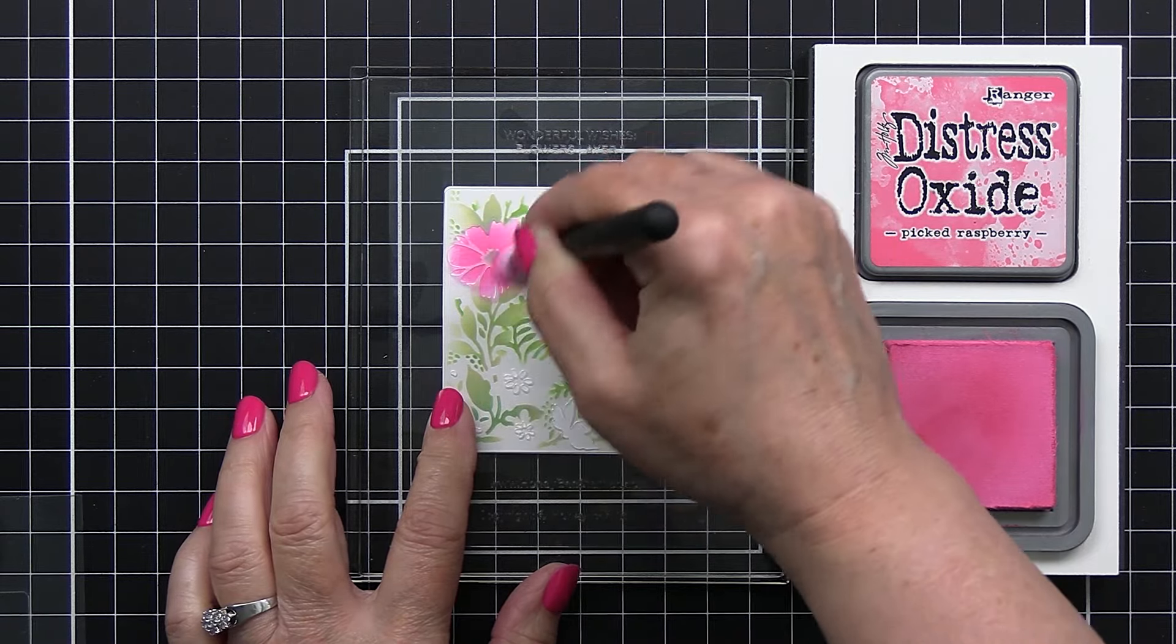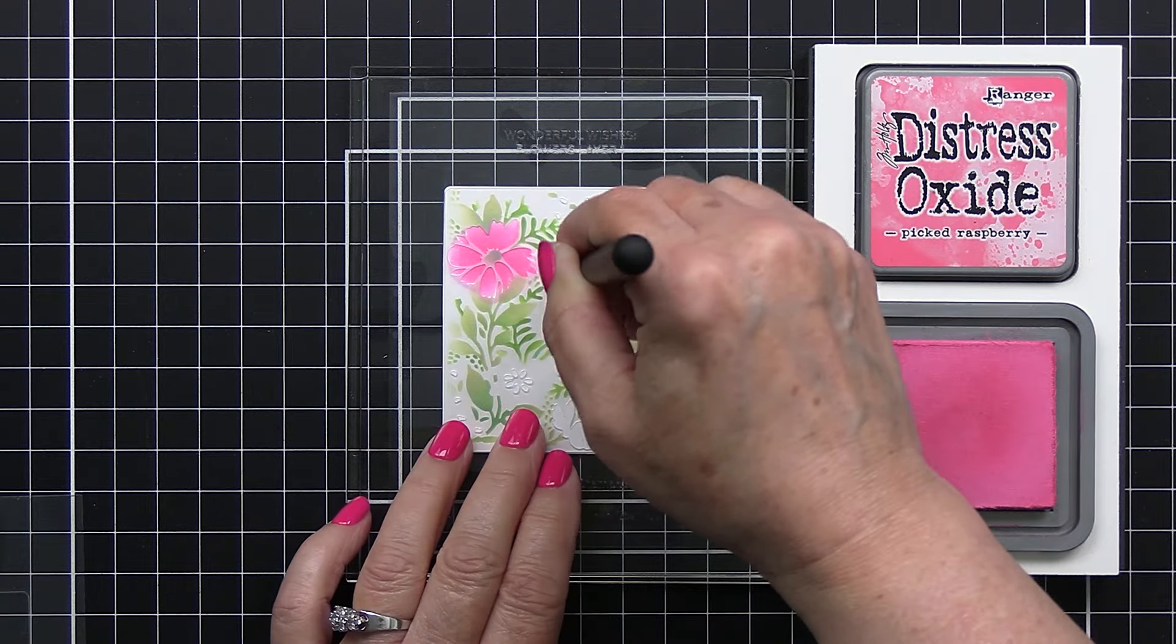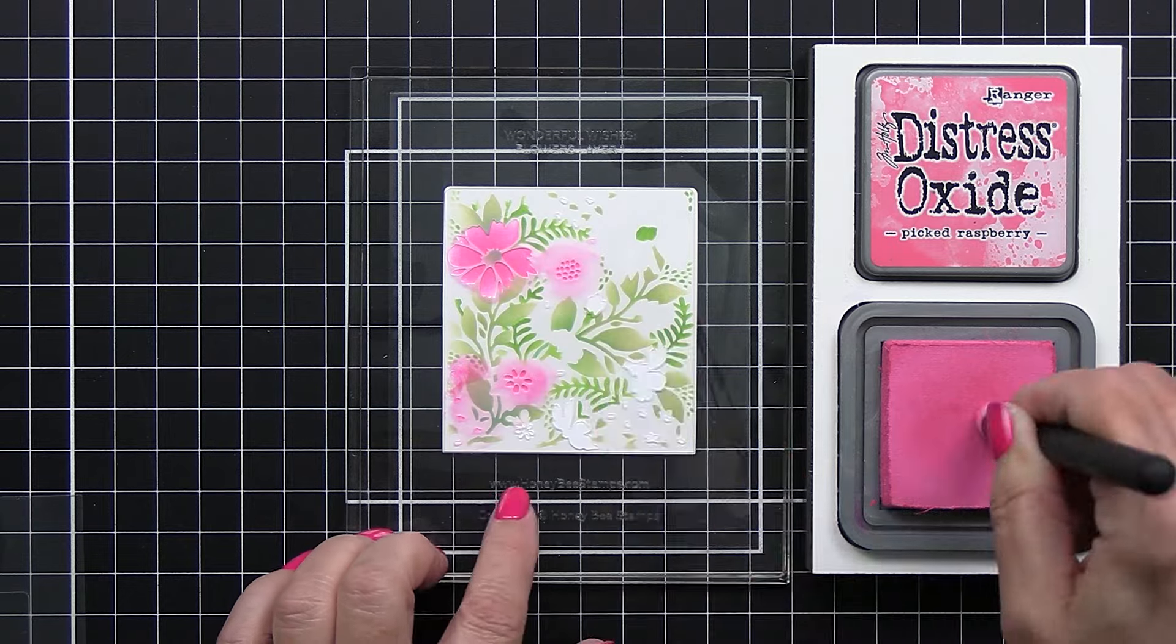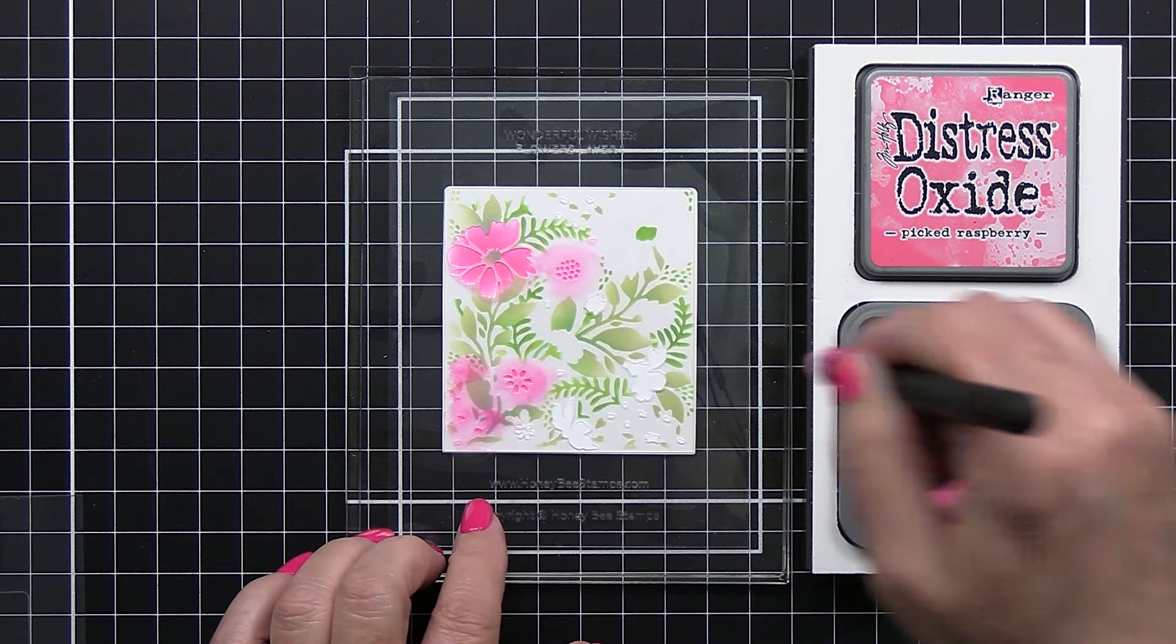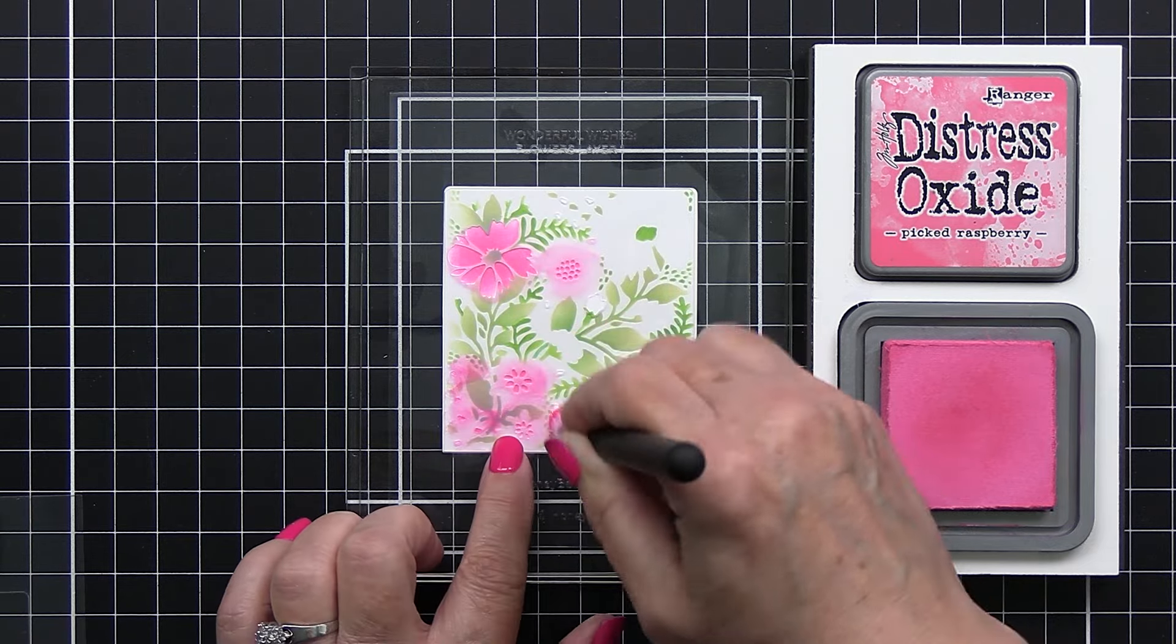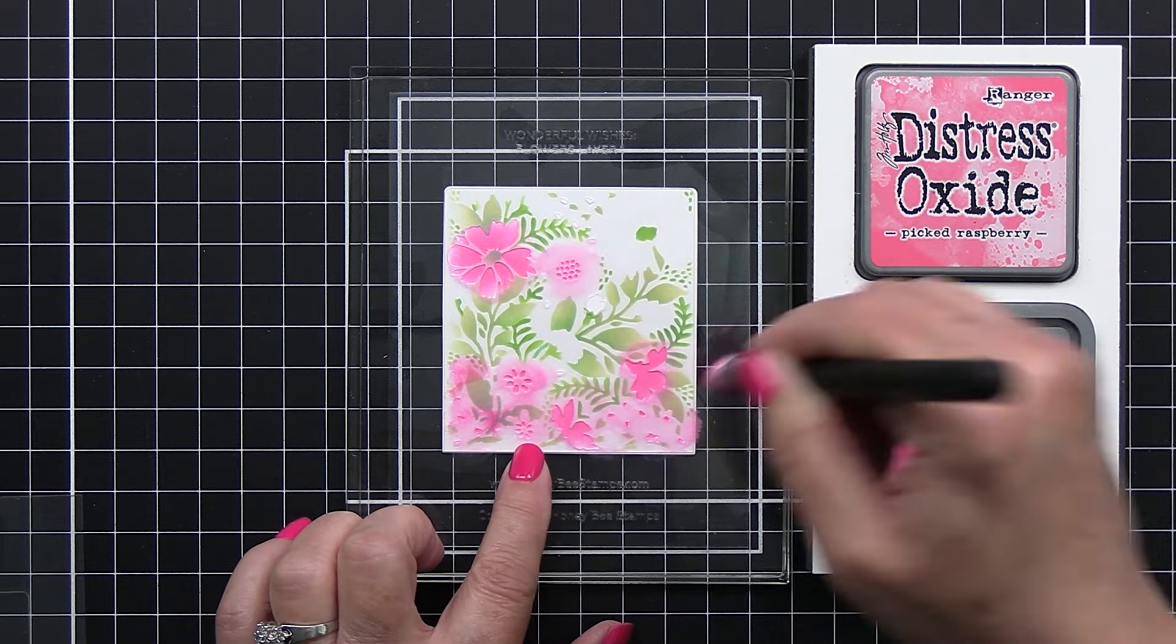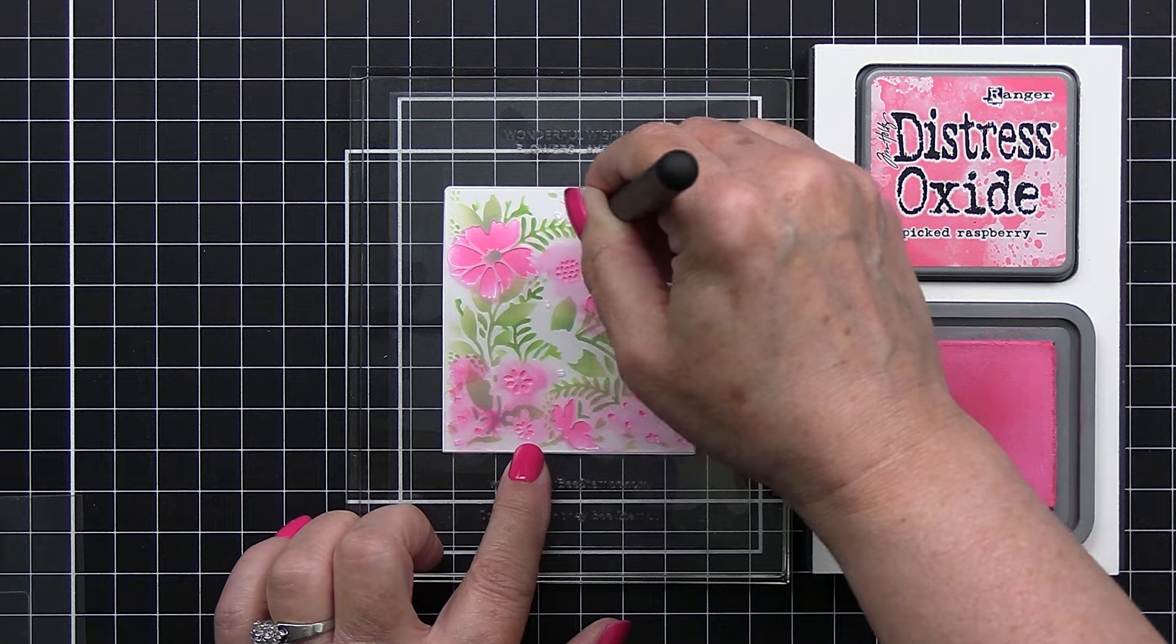Now I'm going in with some Picked Raspberry Oxide ink and the first layer of the flowers, and so here you can see how bright and pretty this is and how nice that looks with the green.